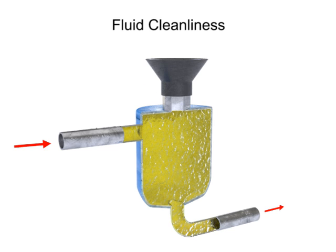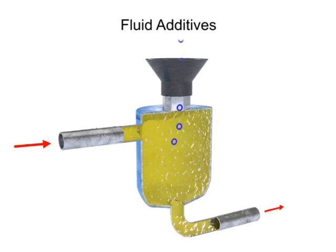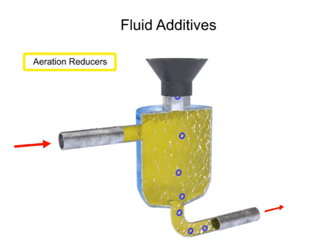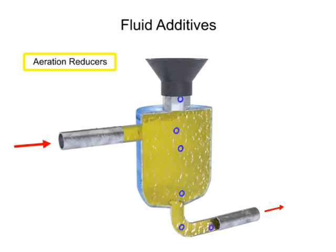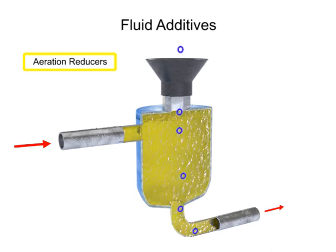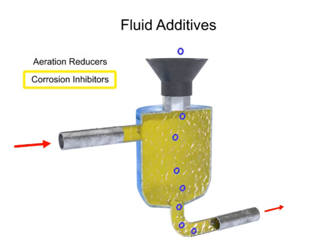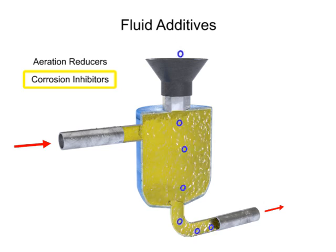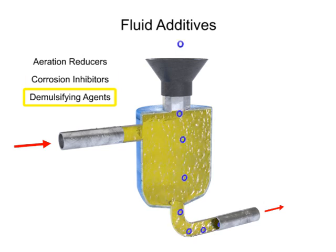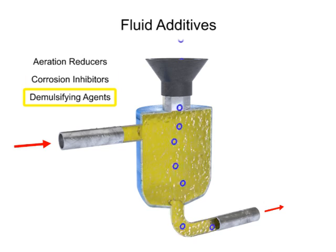Another factor common to hydraulic fluids is the use of additives. Additives can be used to reduce aeration and the production of bubbles as the fluid travels rapidly throughout the system. They can be used to administer corrosion inhibitors within the reservoir, and they can be used as a demulsifying agent, which helps the fluid resist mixing with water.